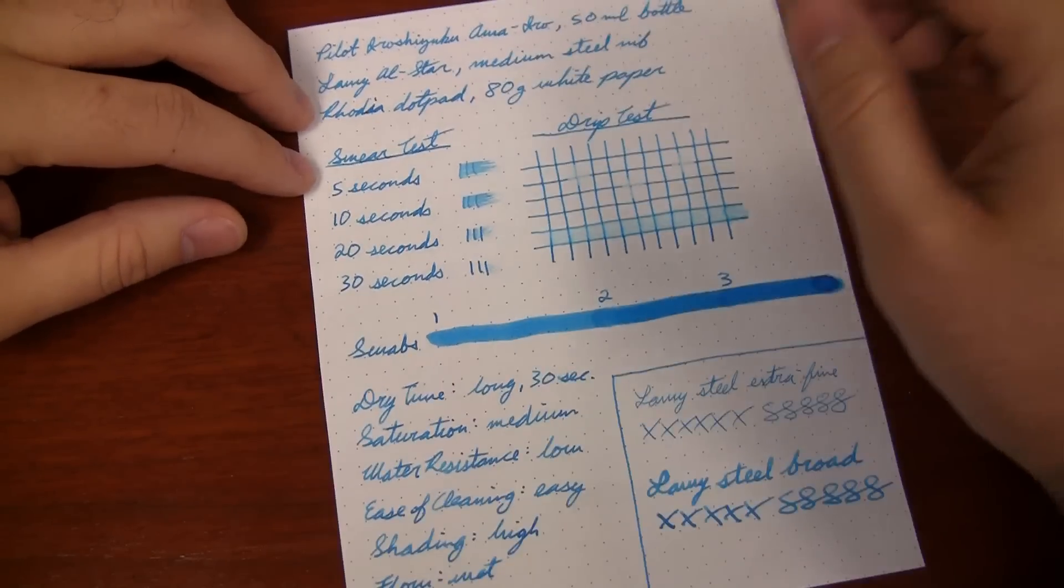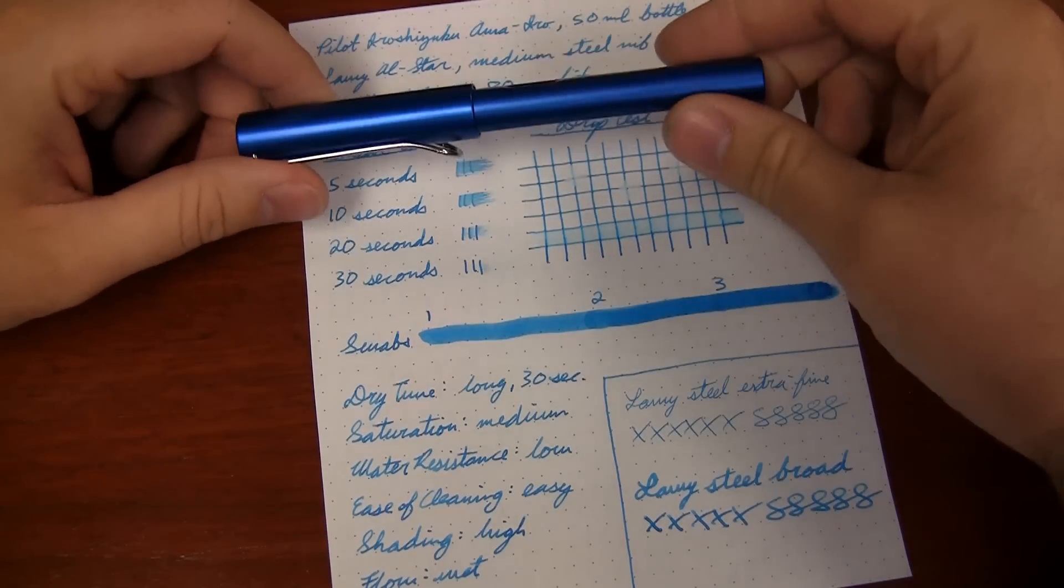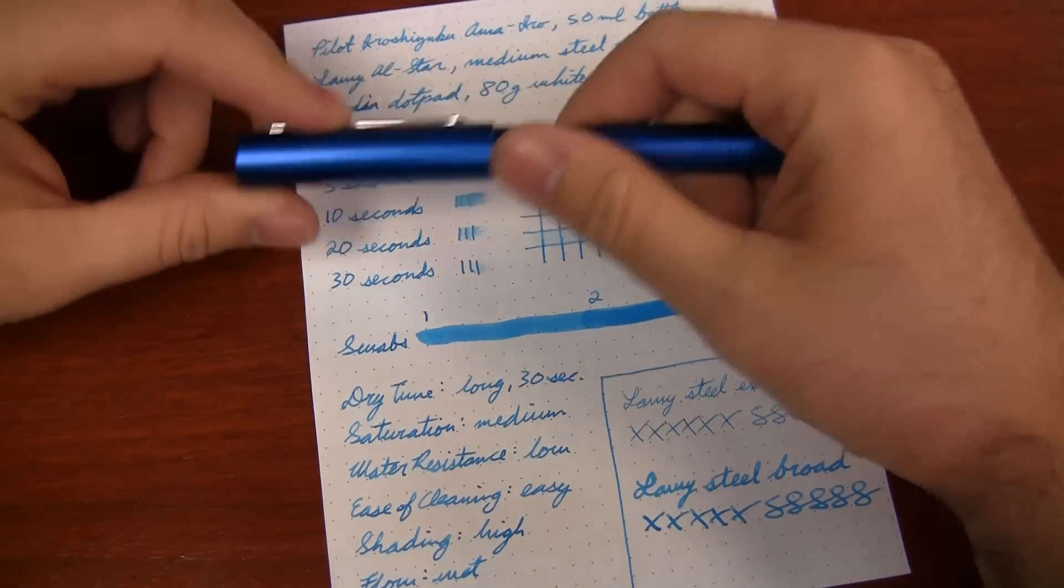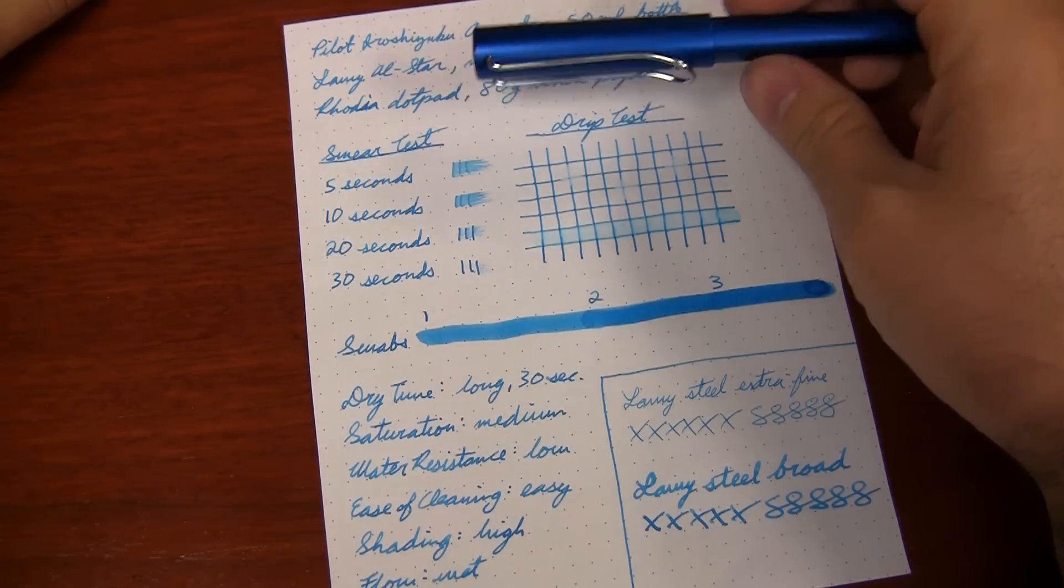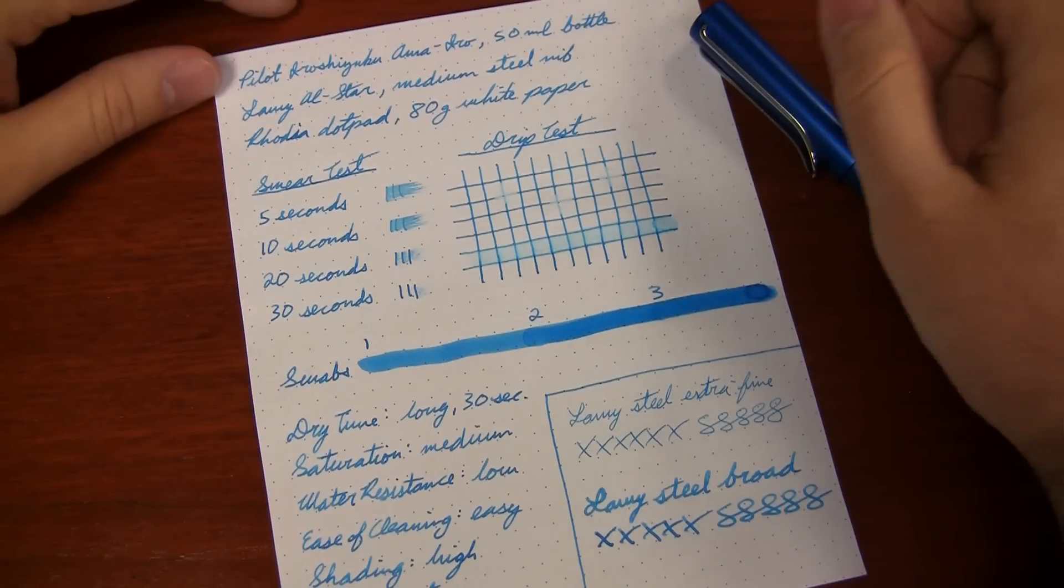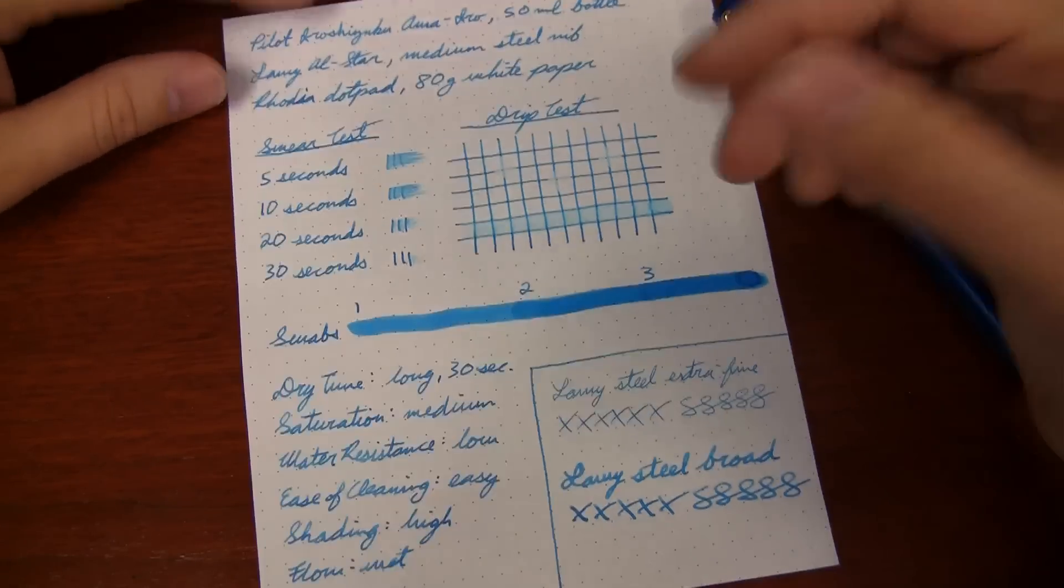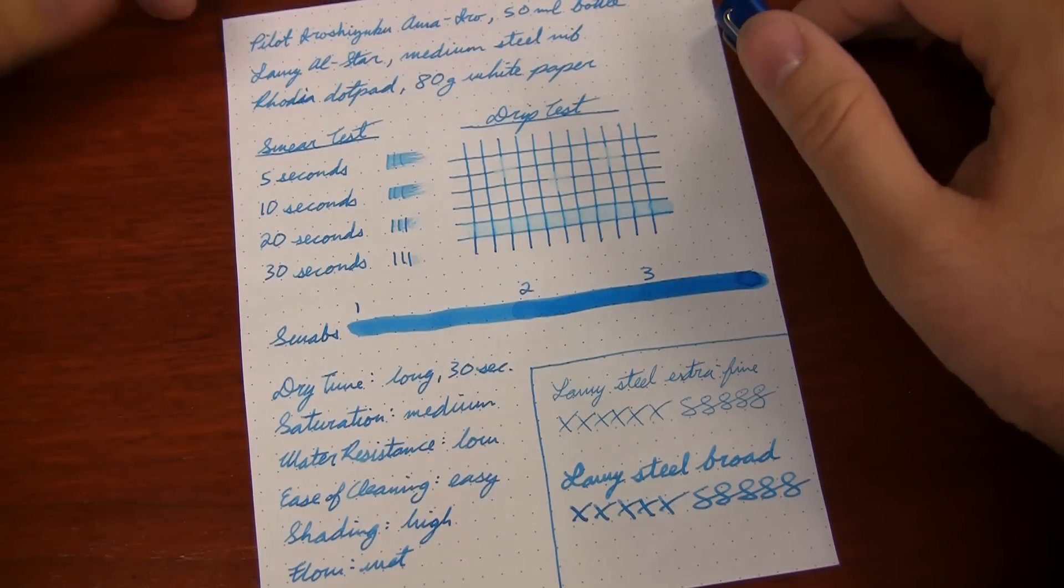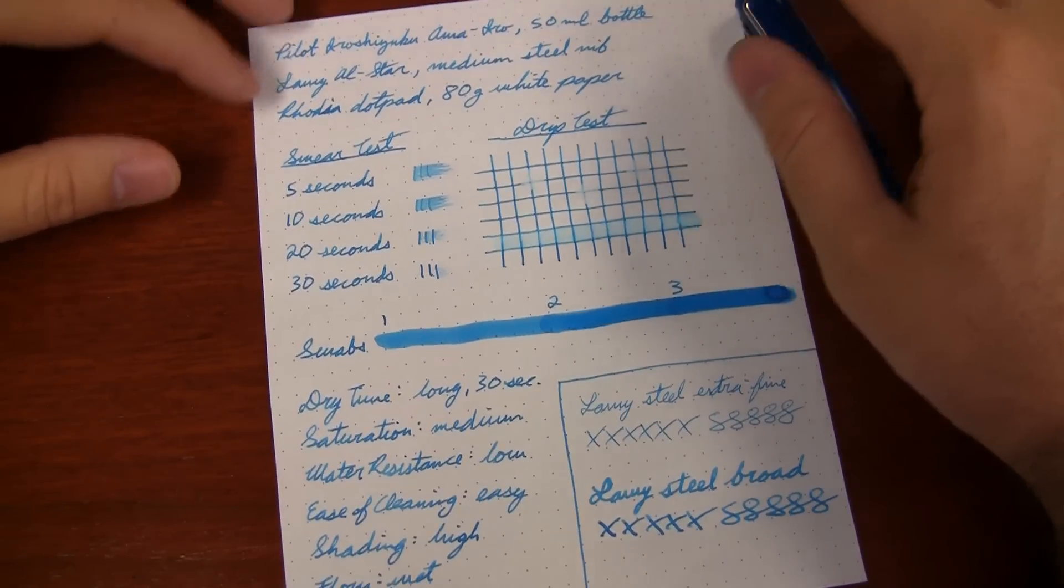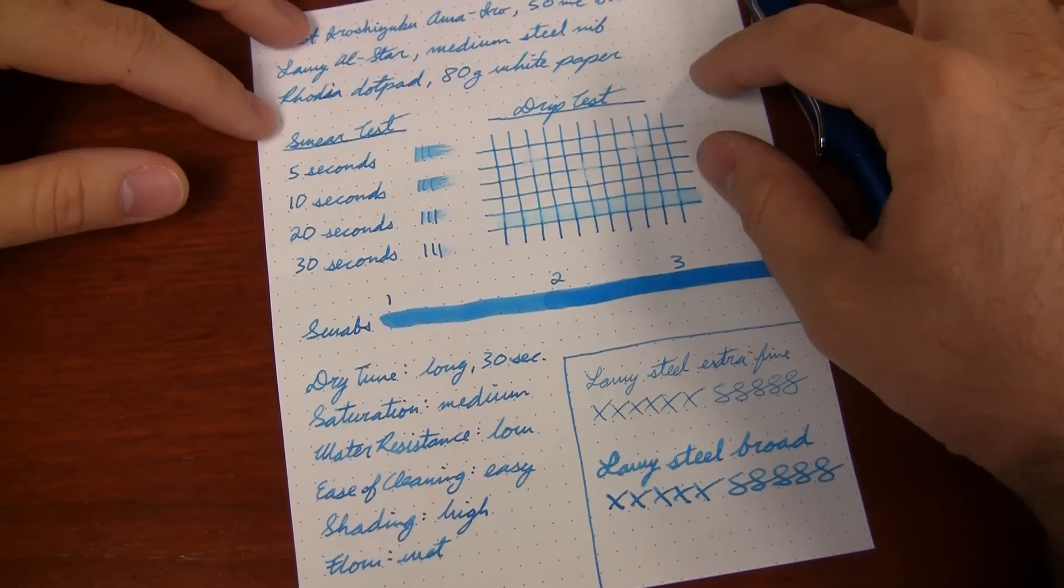So it's sold in a 50 ml bottle. I reviewed it with my trusty Ocean Blue Lamy All Star with a medium steel nib. I use this pen for a lot of different reviews. It's one that I'm familiar with, and I feel like a lot of people have Lamy nibs, so it'd be a good thing to base it off of.